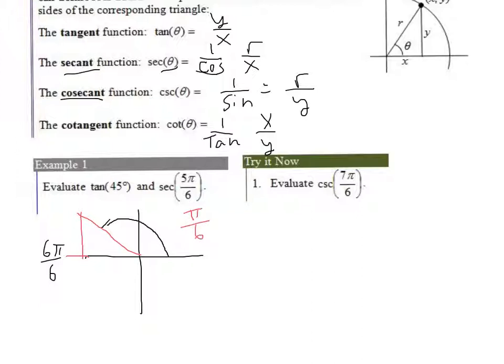And that's the same thing as 30 degrees, because remember, 180 divided by 6 is 30. So if this is 30 degrees, that means this is 1, this is the square root of 3, and this is 2. That has to be negative.